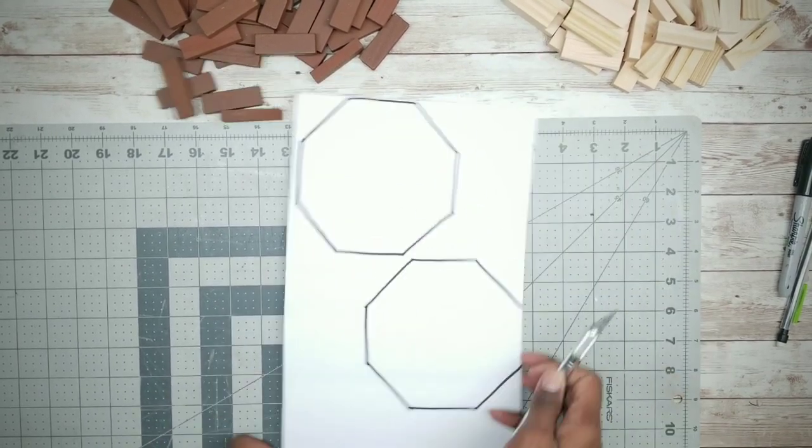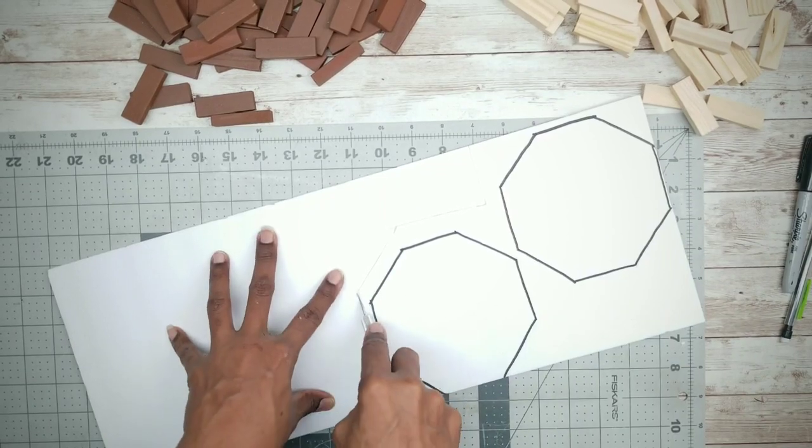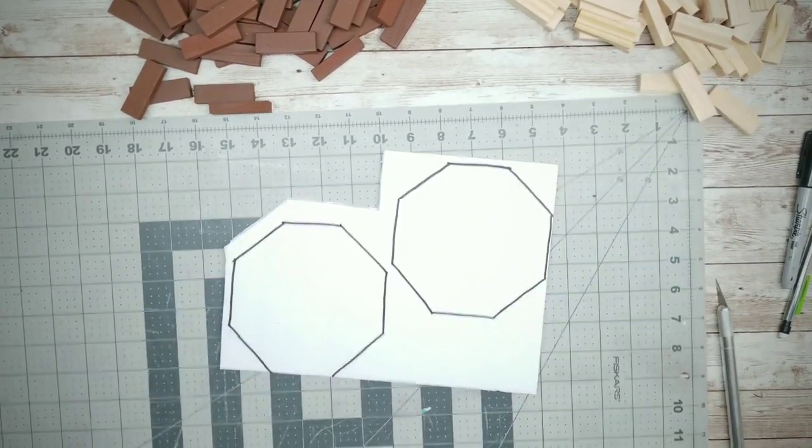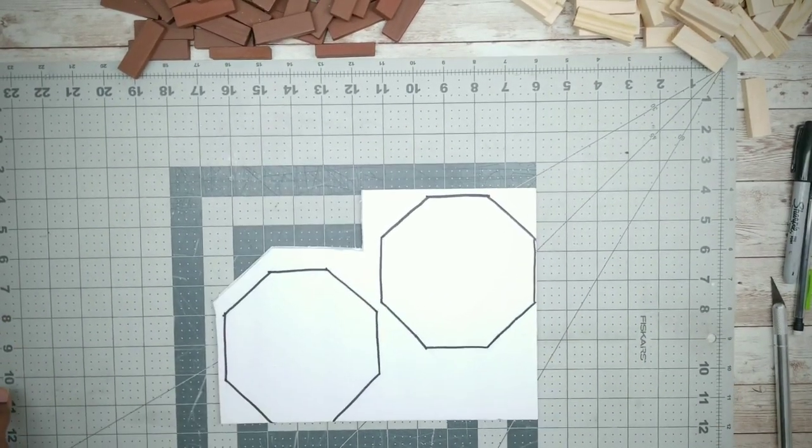Here I am just going to use my X-Acto knife and I am going to cut off the excess foam board, making sure you leave a slight edge around those shapes.